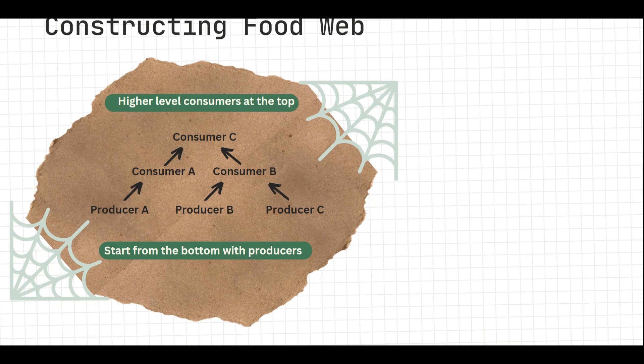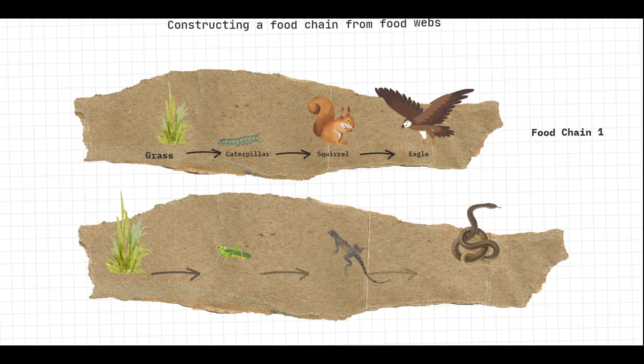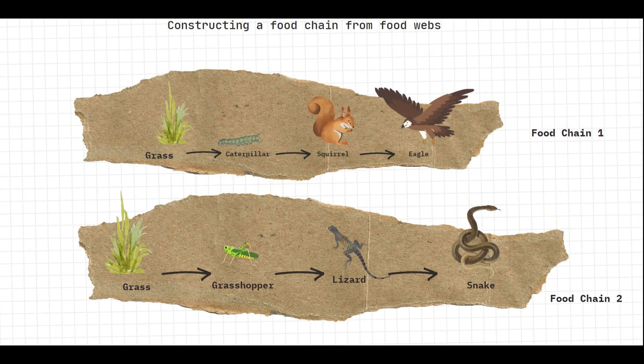How do we construct food webs? Food webs are made from food chains. We start from the bottom with the producers, then we have the consumers at the different levels. For example, if you are given two different food chains to construct a food web, you have food chain one and food chain two, each with producers, primary consumers, tertiary consumers, and quaternary consumers.